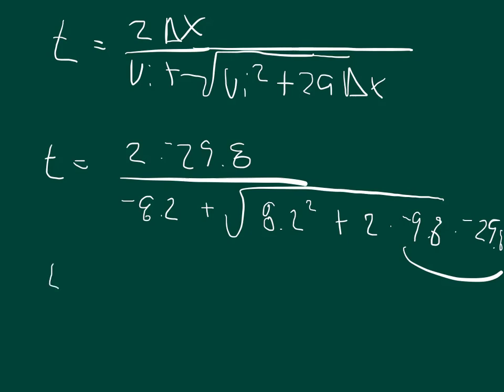So we'll simplify this a little bit, and we'll get that the time is equal to negative 59.6 divided by negative 8.2 plus the square root of, in the 8.2 squared.